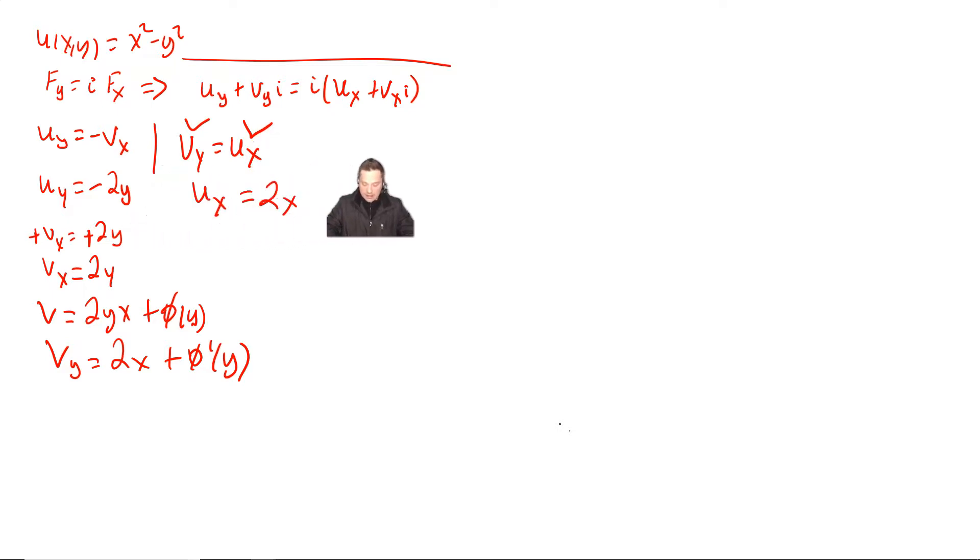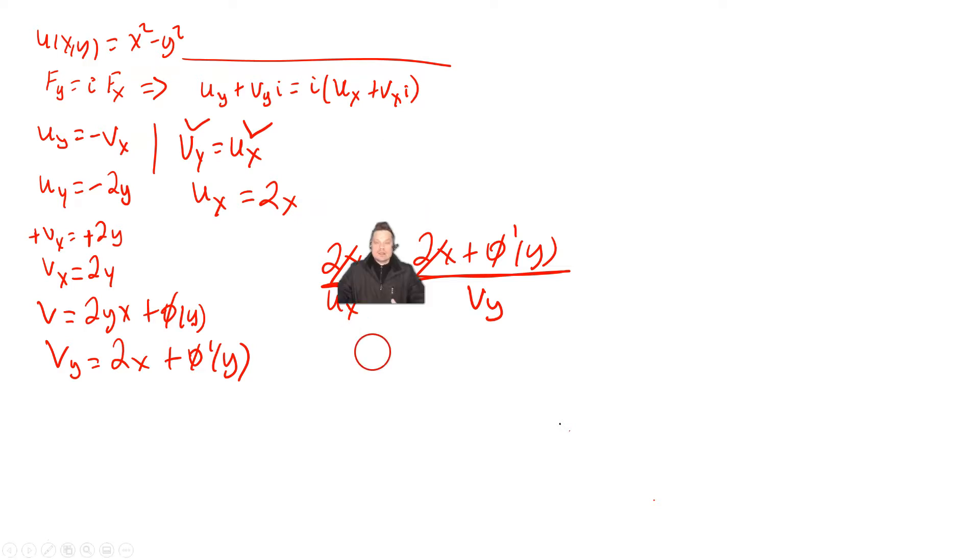So it's going to look like this at the next step, essentially, that I have that 2x, so this is my u sub x, is equal to 2x plus phi prime of y. So this is that part, and on the right side, that's your v sub y. I'm equating them for that reason. And then after that, we'll take a look. When you solve, you'll have that this can be crossed off with this. So it's going to give you the following at the next step, that 0 is equal to phi prime of y.